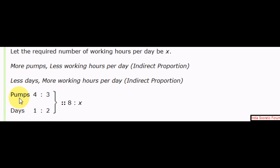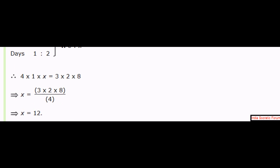So now 4 is to 3, 1 is to 2 is to 8 is to x. So 4 is to 3, 1 is to 2 days wise, pump wise. 4 into 1, 1 into x, 3 into 2 into 8. That's all. Very simple. So x equals 3 into 8 by 4. That is equal to 12. All we have to do is substitute that. Bring it up like this and divide it out by 4. So x equals 12.